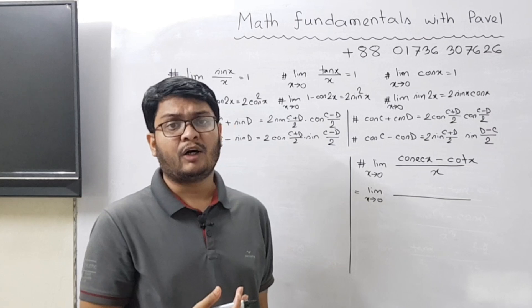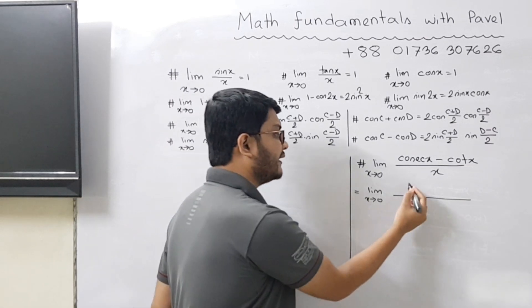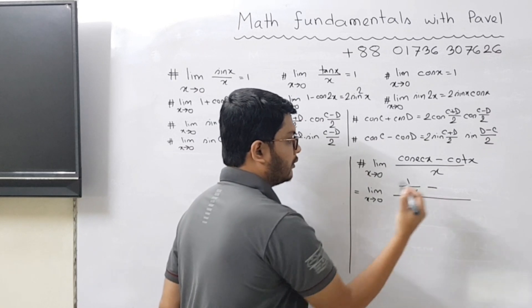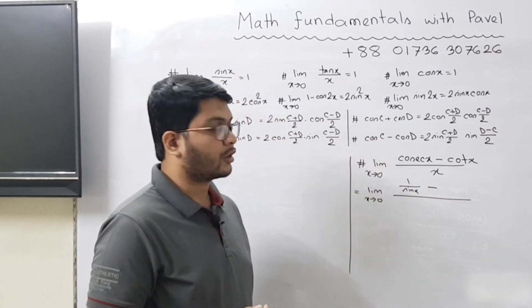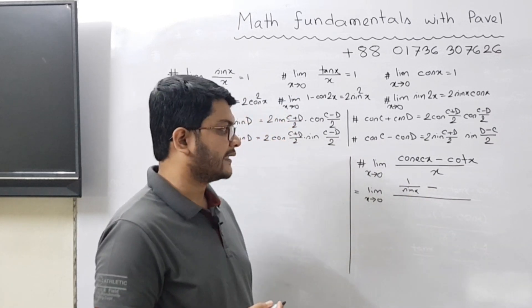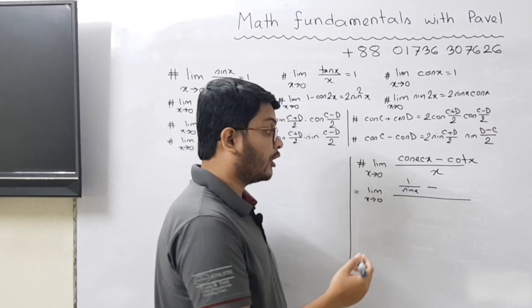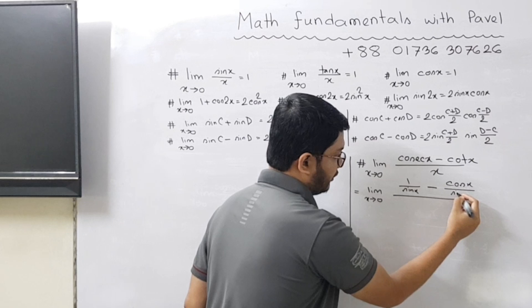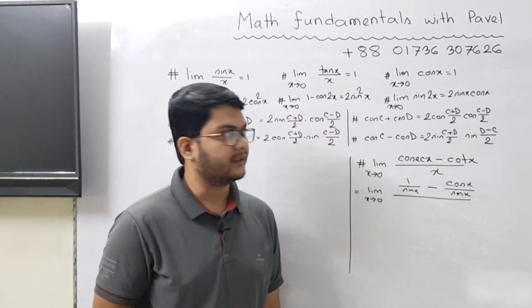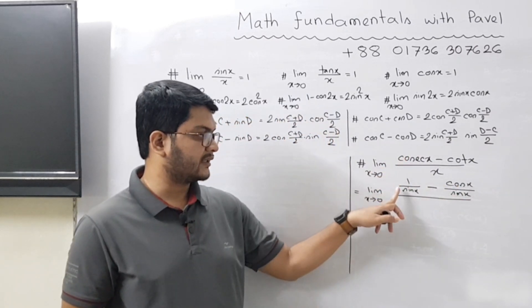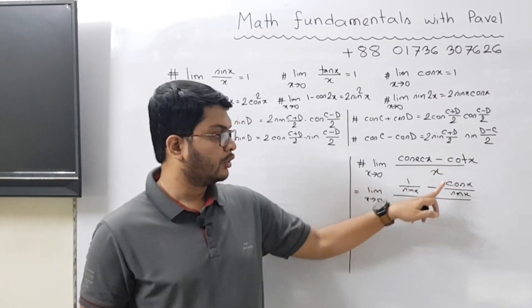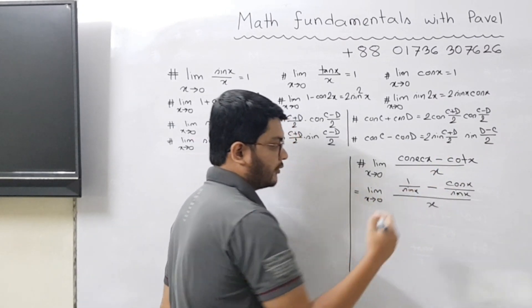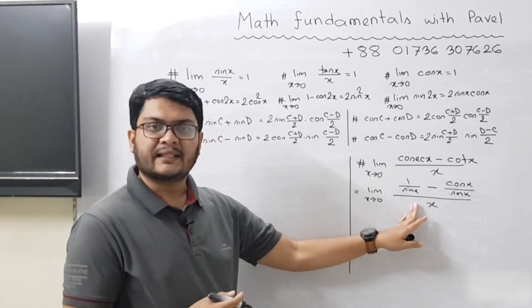We know that cosec x is the reciprocal of sin x, so we can write it as 1 by sin x. Minus cot x, so we can write cot x as cos x over sin x. So cosec x equals 1 over sin x and cot x equals cos x over sin x, divided by x. I hope you understand this part.